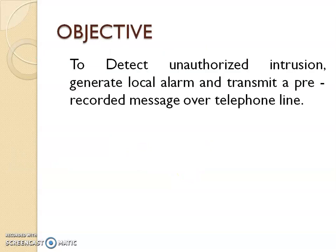If you look at Intruder Alarm Systems, the main objective is to detect Unauthorized Intrusion. In general, this pertains to people only. When an Unauthorized Intrusion happens in a building, the objective of the system is to generate an alarm and transmit a pre-recorded message over Telephone. This means if a building is compromised in security by means of an Intrusion, you can see the alarm activator within the building, or if the device is connected to a Telephone Dialer, you can have the same information transmitted to the concerned person.